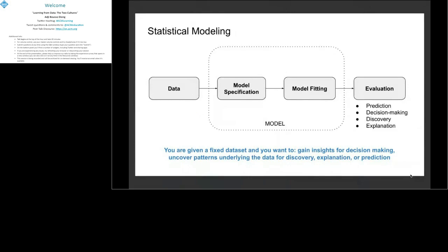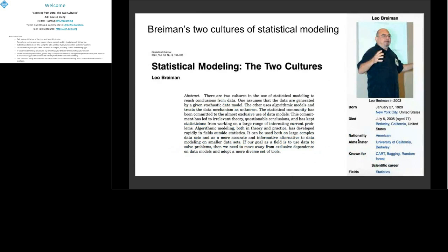Learning from data is what we're interested in. Statistical modeling is one approach to learning from data. In this approach, you start with a data set, you specify a model for it, you fit that model on the data, and you evaluate the fitted model on a goal — for example, prediction, decision-making, discovery, or explanation. Statistical modeling is the setting of Leo Breiman's paper in 2001. Breiman was a famous statistician, who died in 2005, behind many influential methods like bagging and random forests.